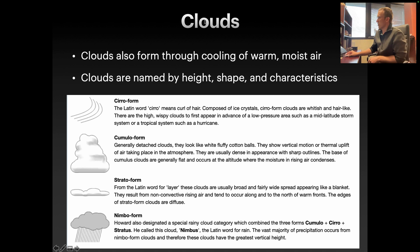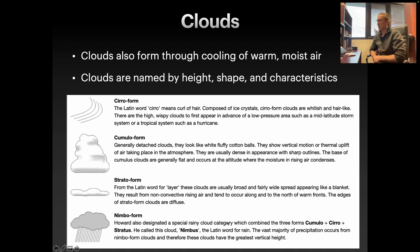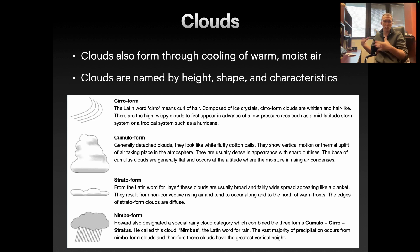We have cirroform clouds — cirrus or cirral means hair — and so these are very high, wispy clouds. Cumulotype clouds look like giant cotton balls; they're very puffy. Stratiform clouds are layered clouds — today in Missouri we've got a lot of stratus clouds that are very flat and layered with some wet, drizzly weather. And then nimboform clouds are rainy clouds, essentially — dark clouds, your rainy day type clouds.